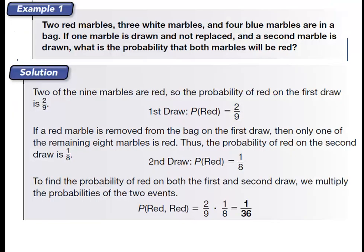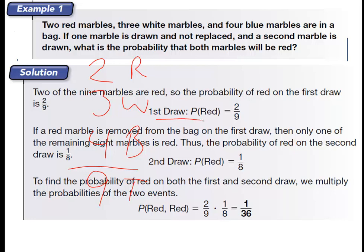In example one, we have two red marbles, three white marbles, and four blue marbles all in a bag together. The first thing we want to know is how many marbles we have total — that's nine total, and that's important to know. Now, if one marble is drawn and not put back and then a second marble is drawn, what's the probability that both are going to be red? The first time we draw, there are two reds and nine marbles total, so our probability is two out of nine.